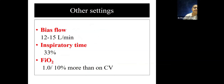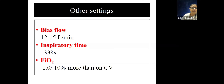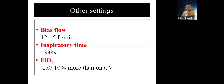Bias flow is set once and not changed much — on SensorMedics you can go up to 15–20 L/min in neonates and 30–40 in older children. Inspiratory time is kept static at 33%. FiO2 is based on saturation — most of these sick children are started at 100% and then brought down, or set 10–20% above the conventional ventilator setting.